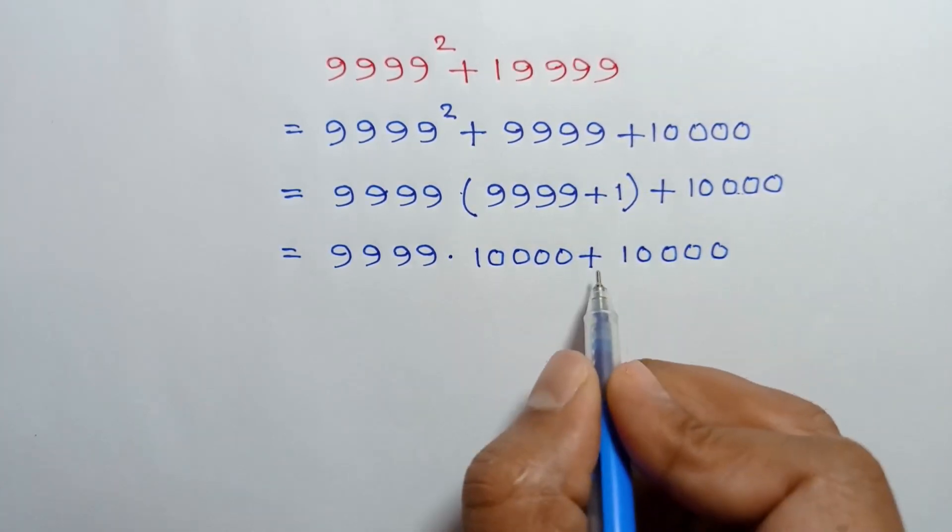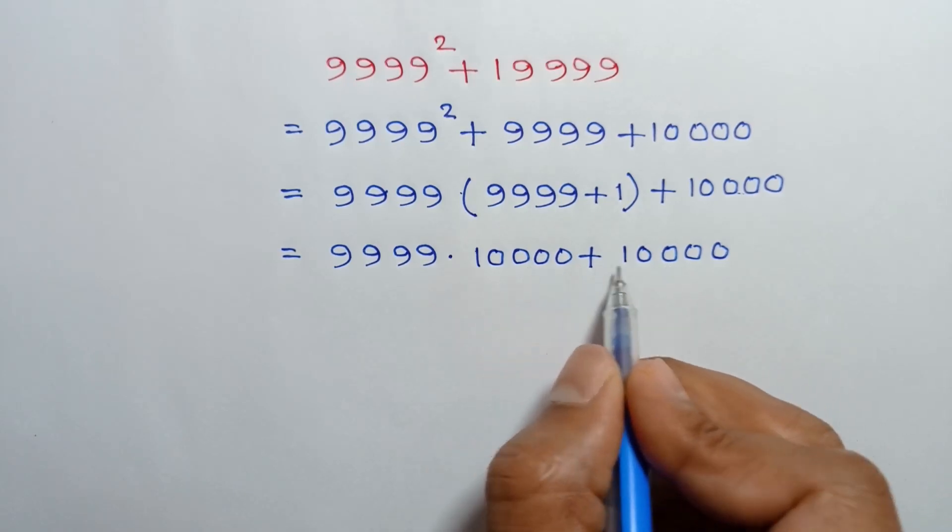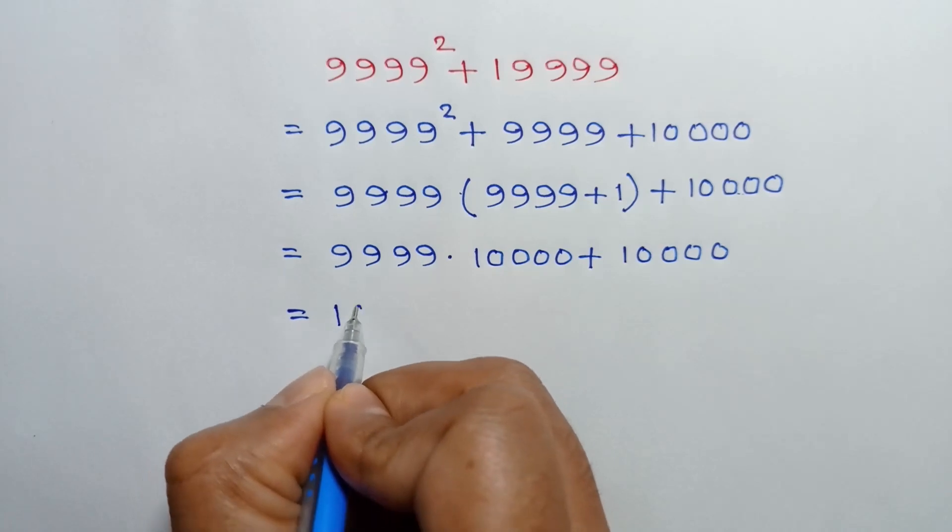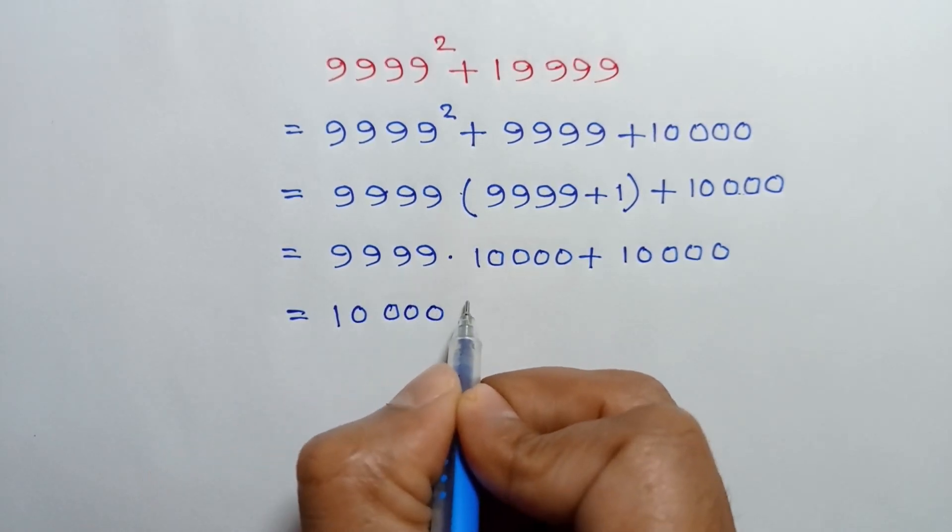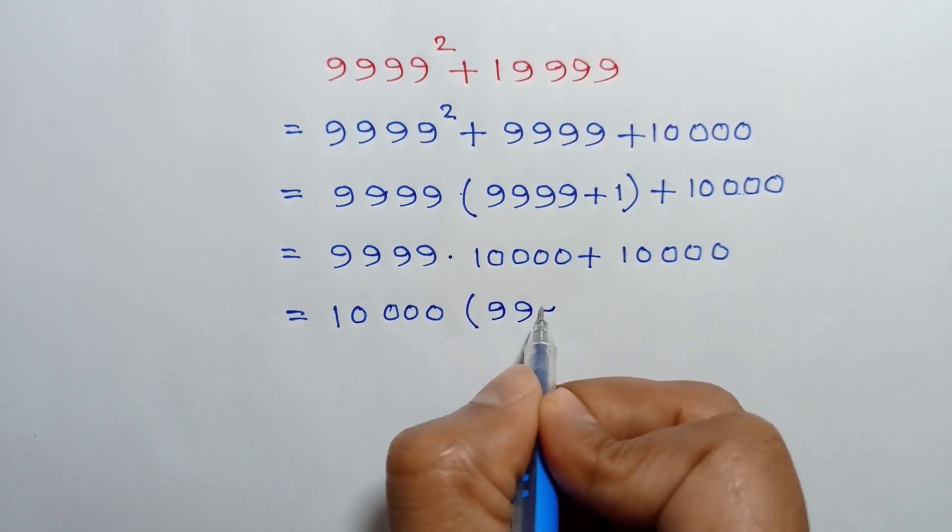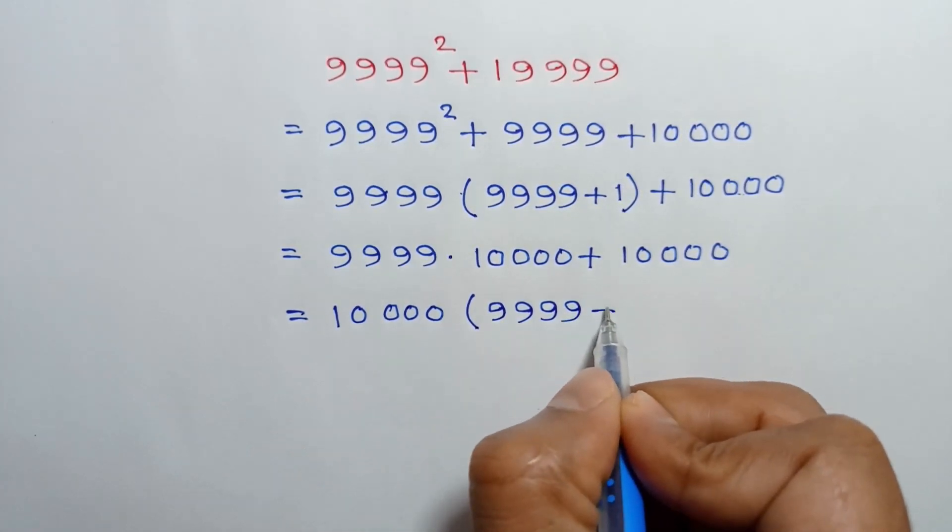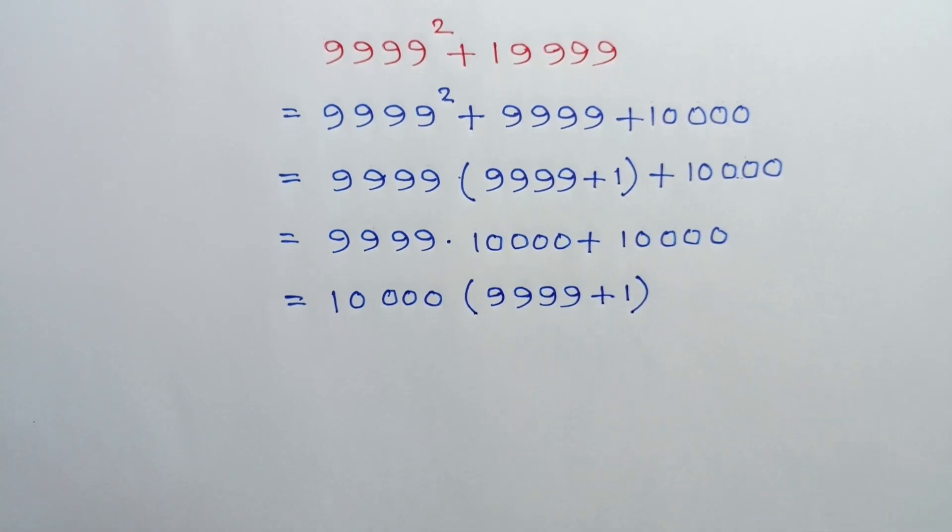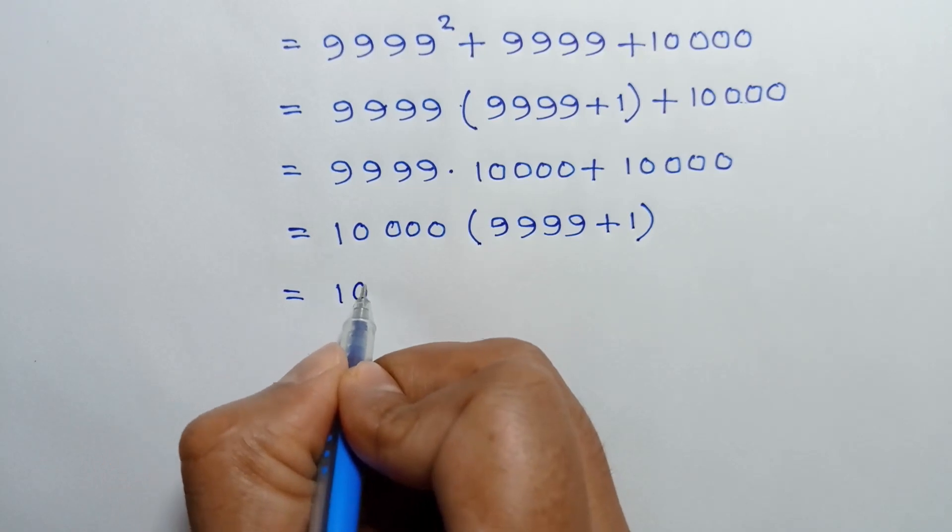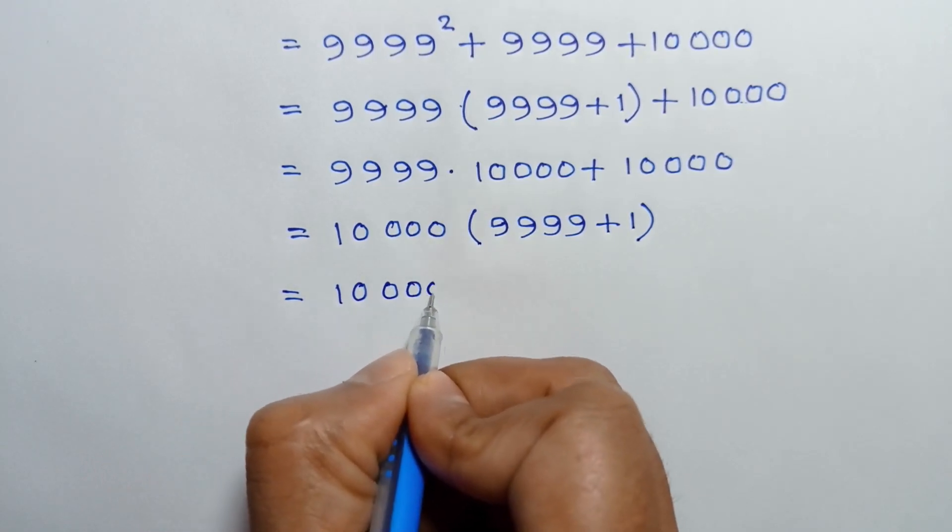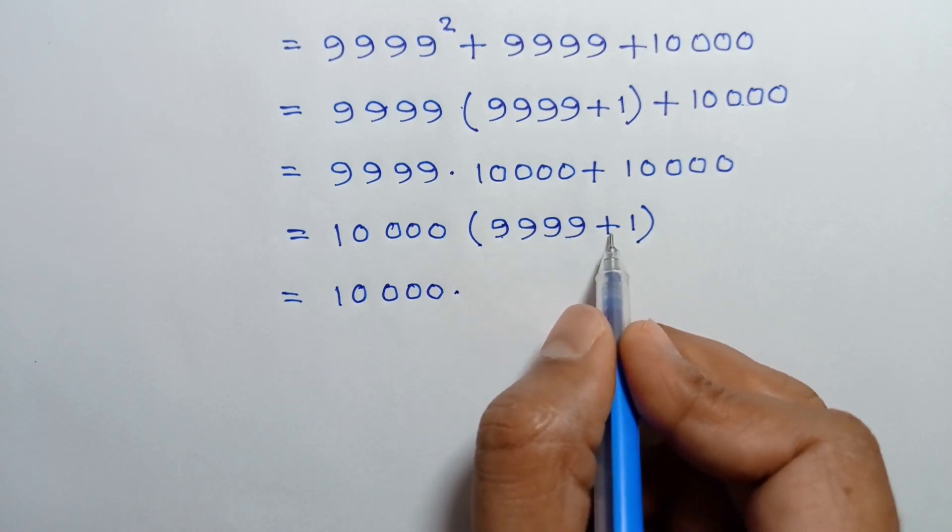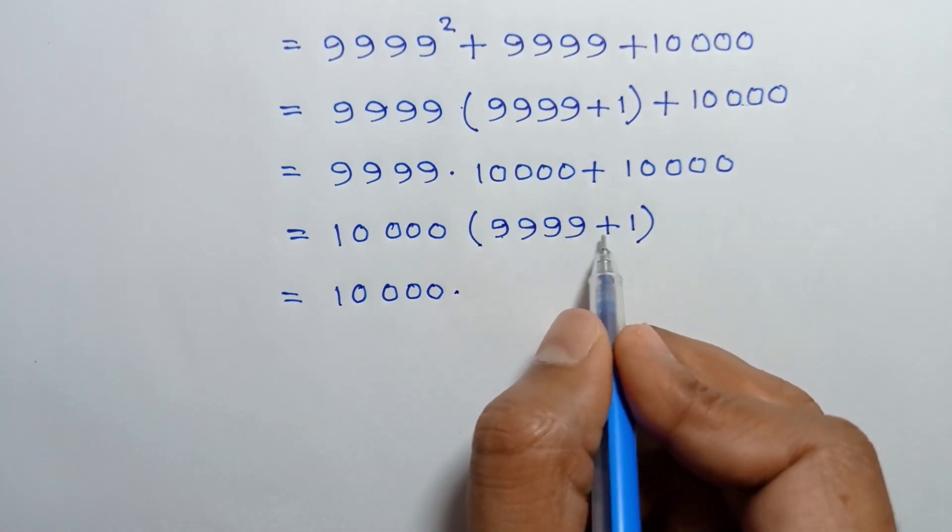Now, if we take 10000 common from these two terms, we can write 10000 times (9999 + 1), which equals 10000 times 10000.